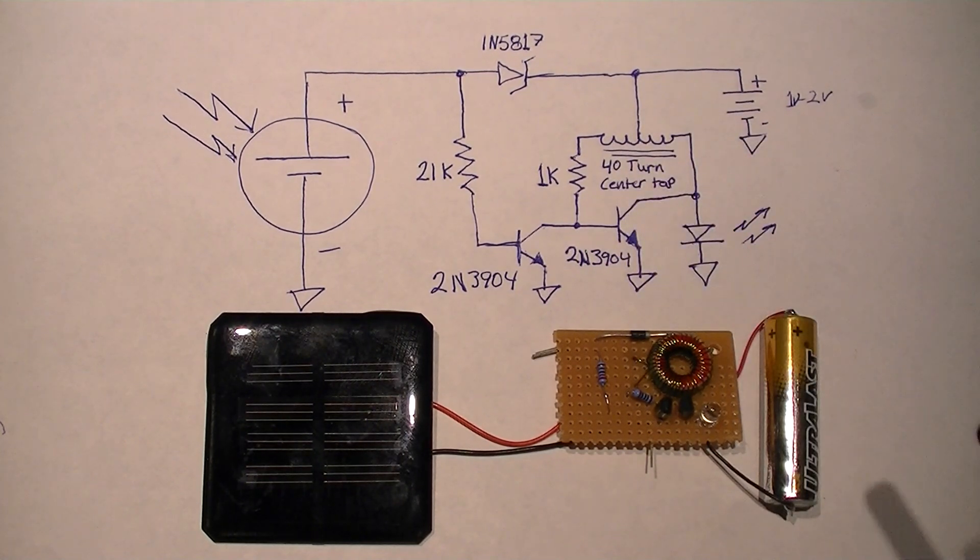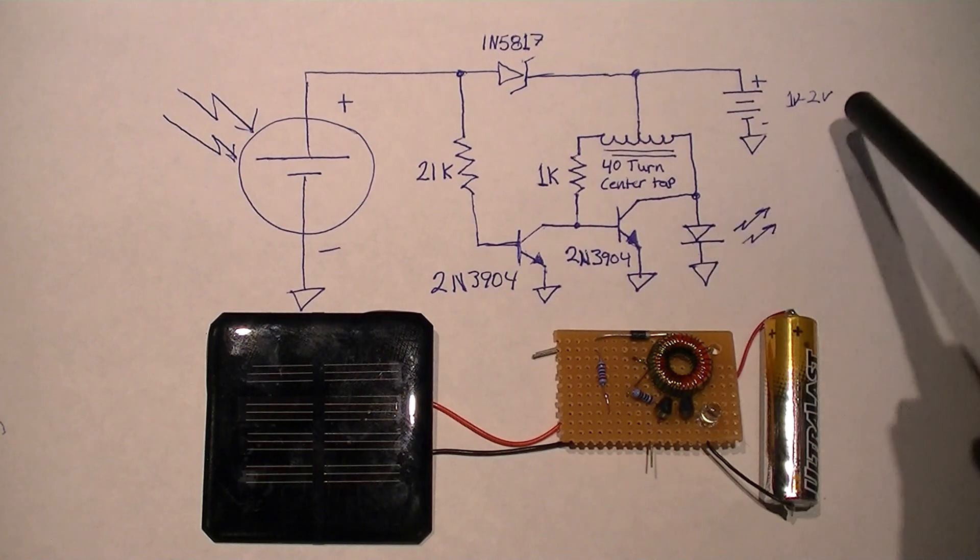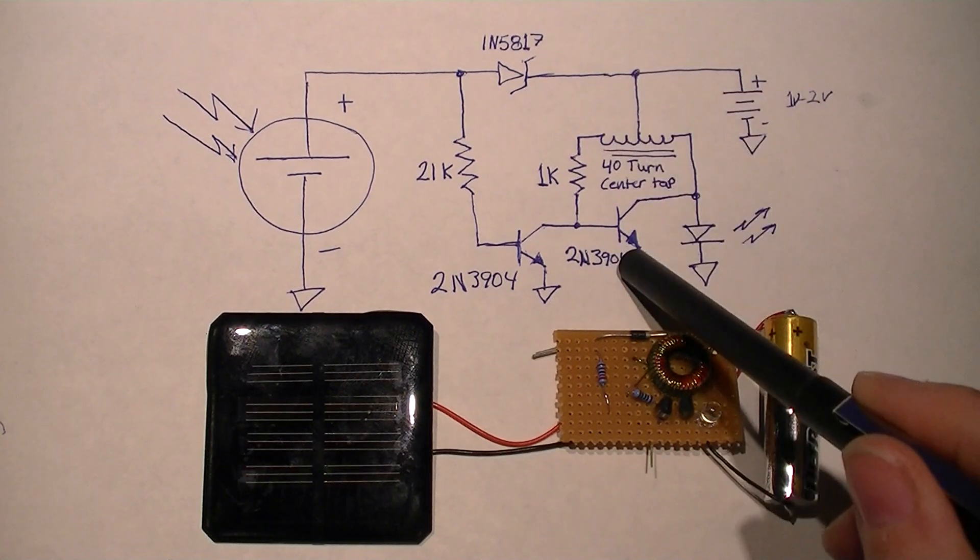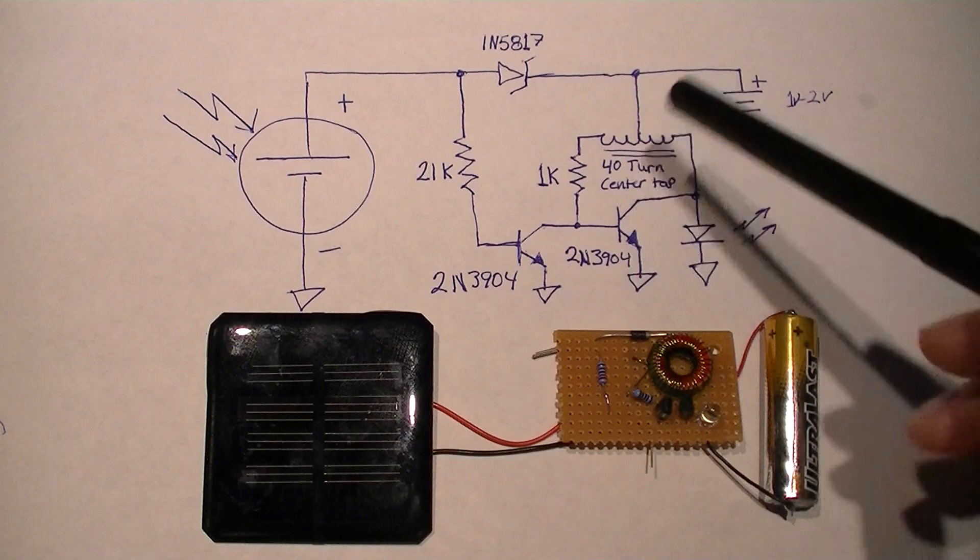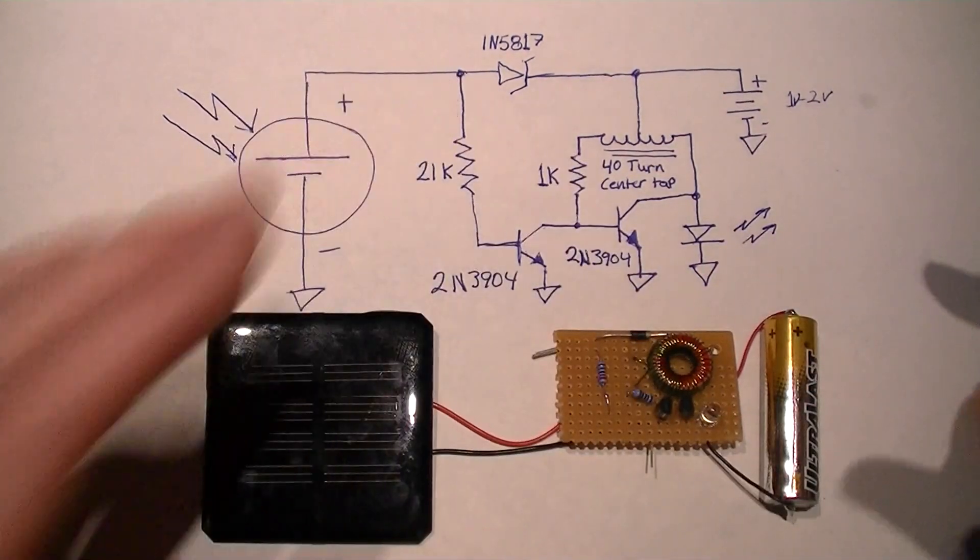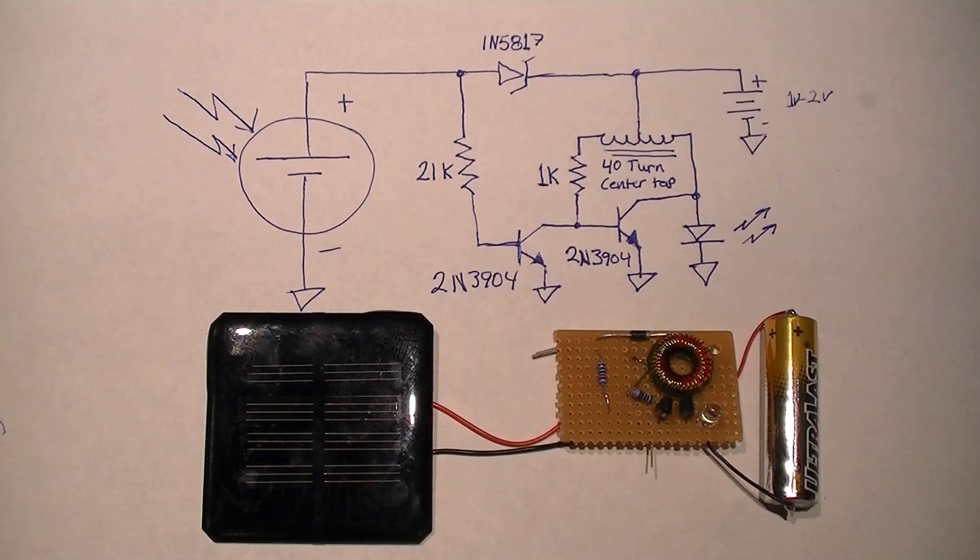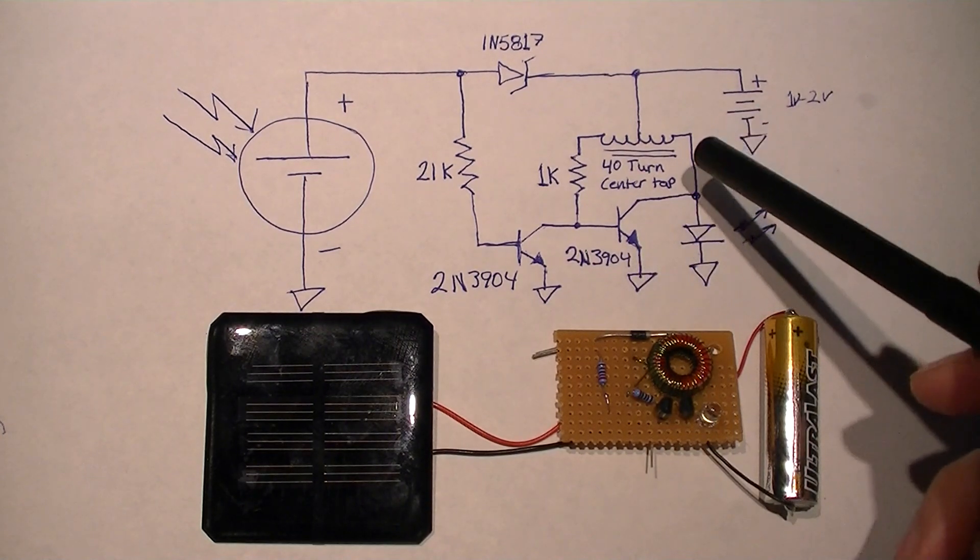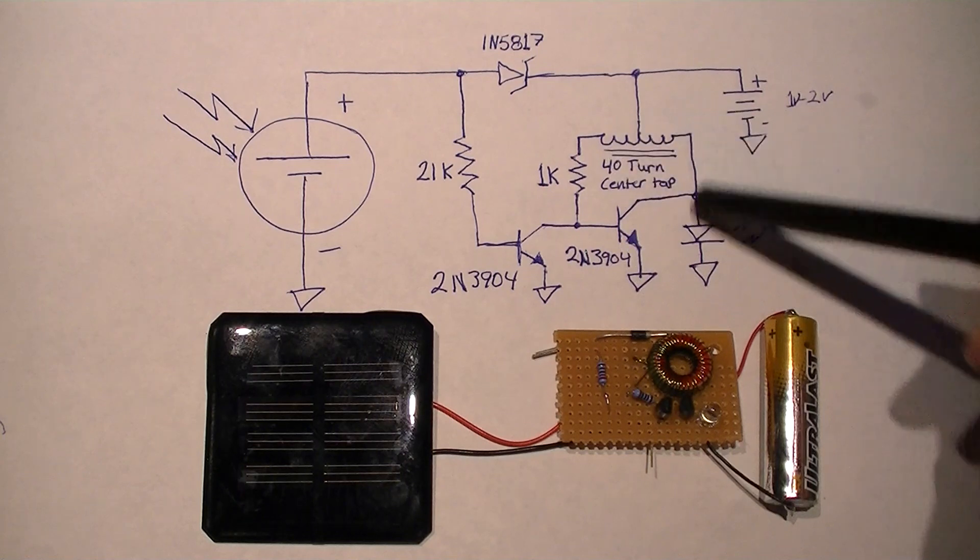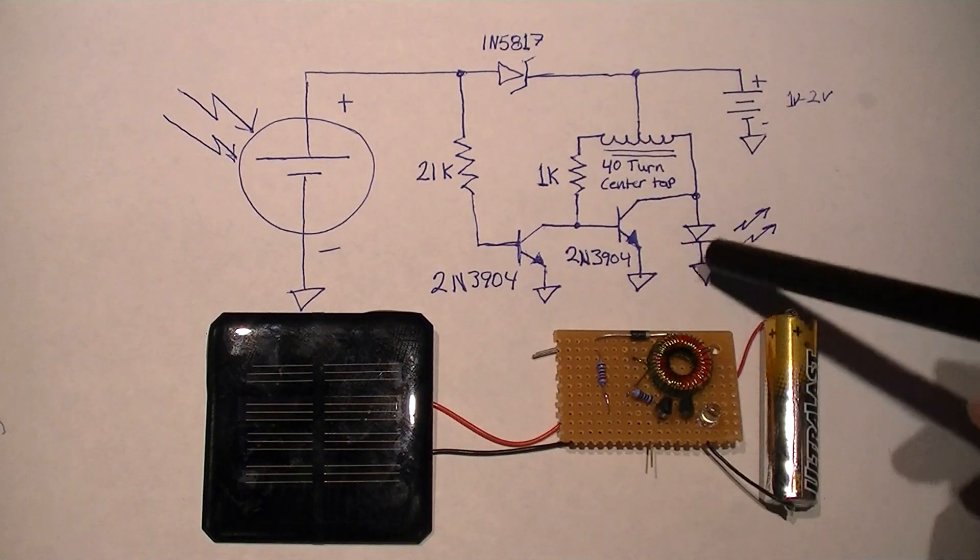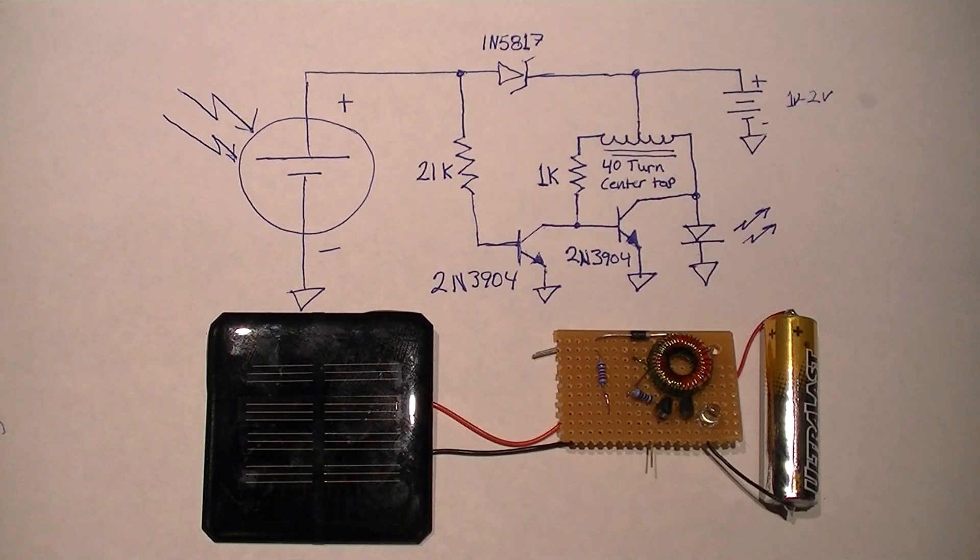It's just an unregulated flyback circuit, so current flows through the transistor, causes a magnetic field to form inside of this toroid inductor, and then when the transistor shuts off, the collapsing field boosts the voltage above the forward drop of the LED.